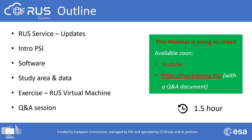Let's have a look at the outline of this session. We will start with the introduction to the RUS service, then move on to persistent scatterer interferometry, then the software we will use, and the study area and data. Finally, we will move to the RUS virtual machine for the hands-on exercise. The session will close with a live Q&A, will take approximately one and a half hours, and is being recorded for the RUS training YouTube channel, training portal, and Q&A summary document.